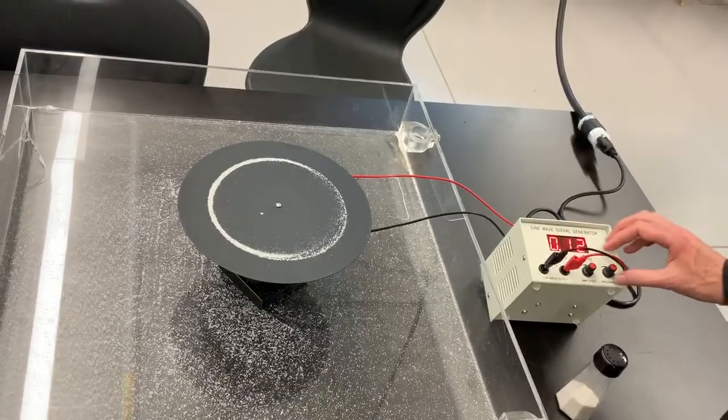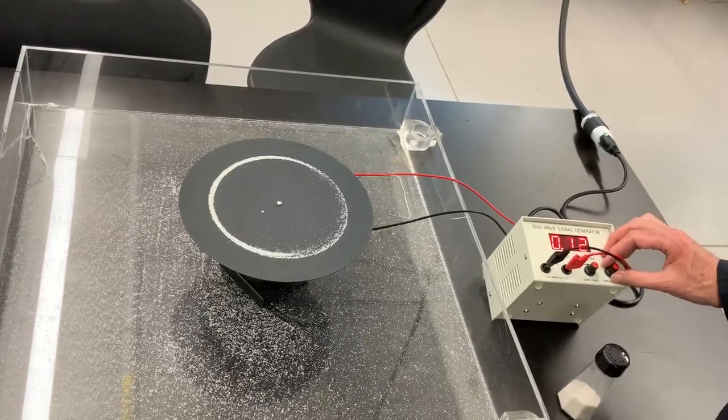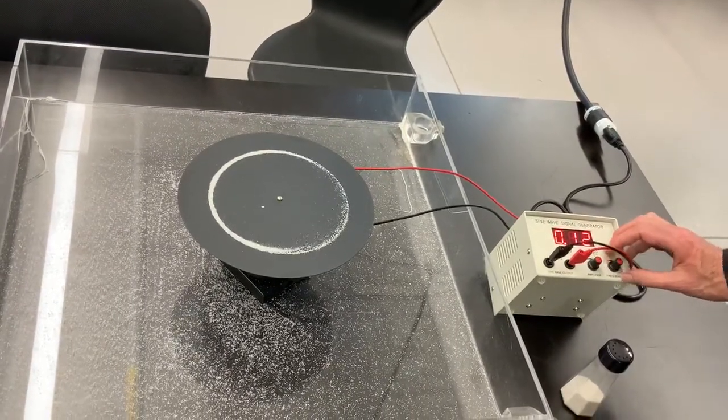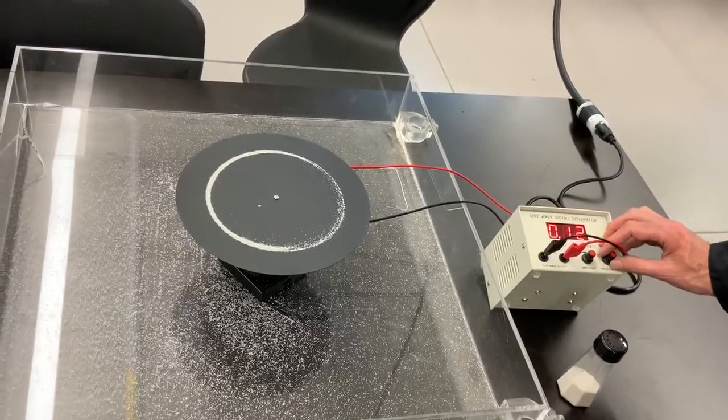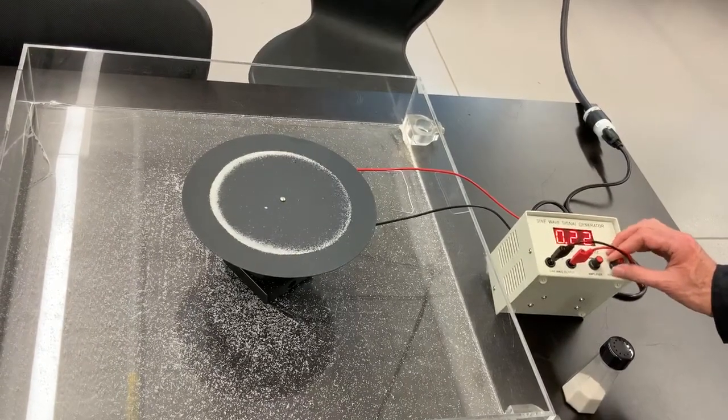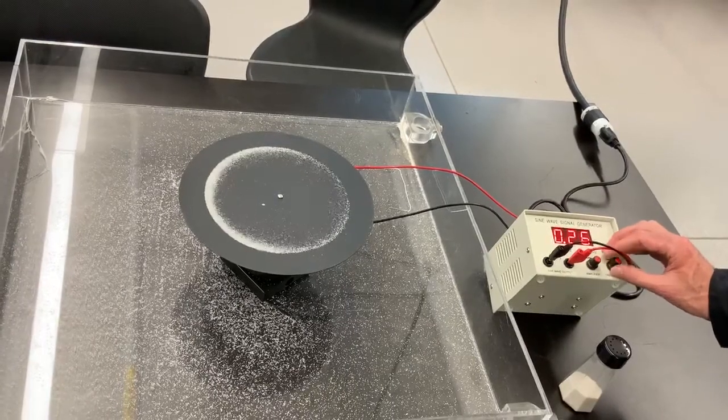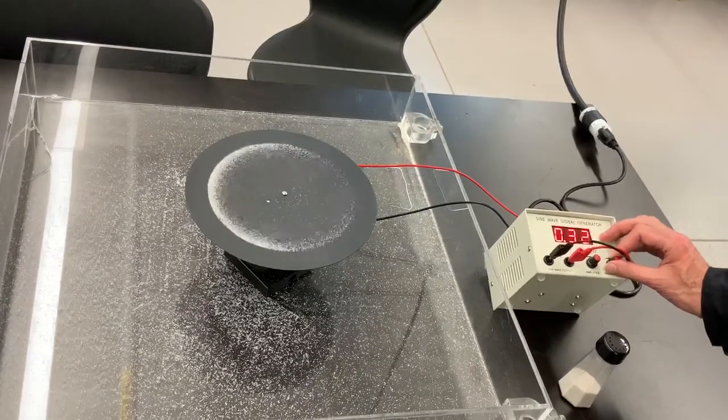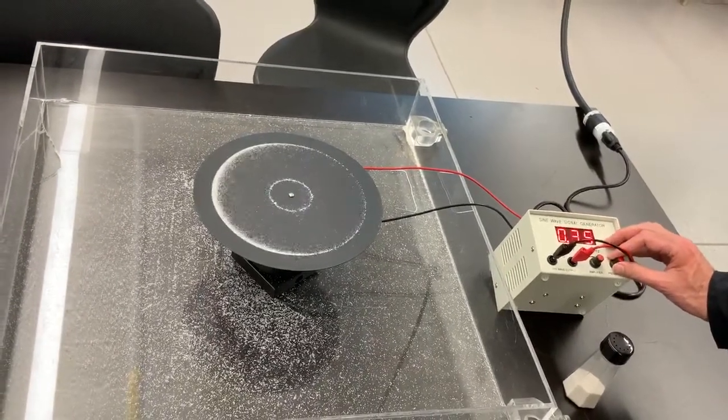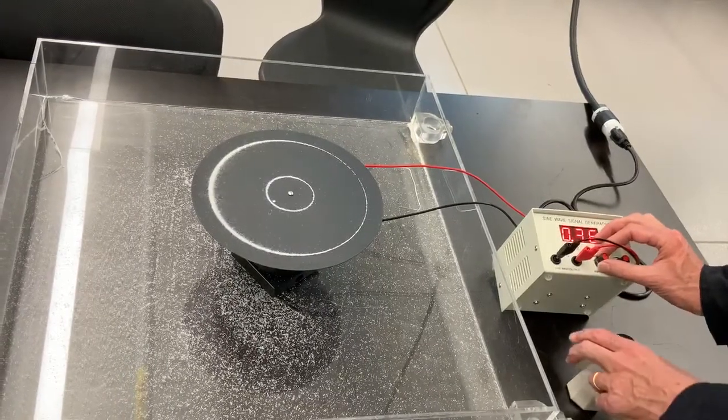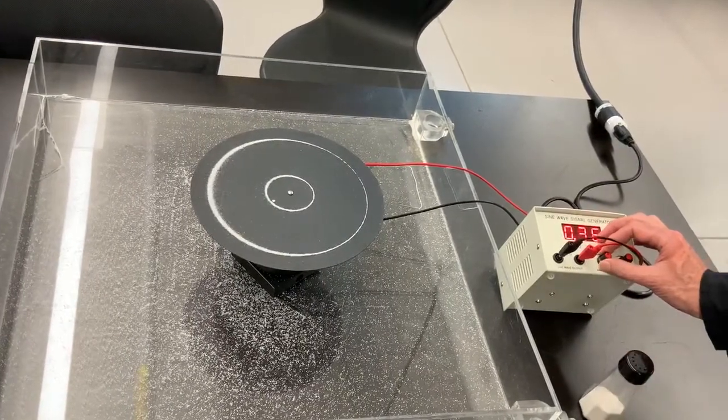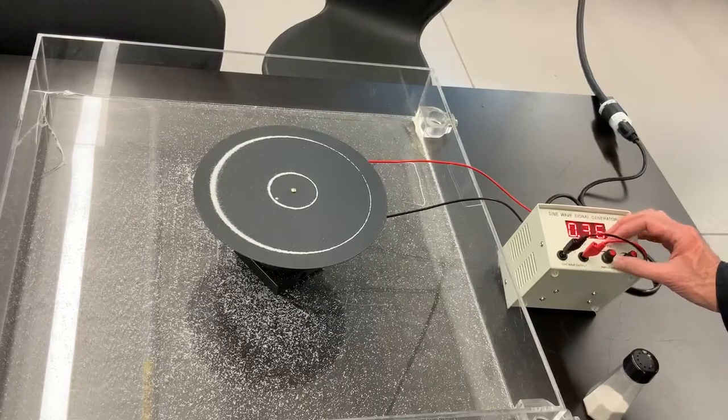We can continue this. We can find other resonant frequencies that will give other patterns. And you'll notice it'll get louder as we close in on the resonance. At 360, we have a two-ring resonant pattern.